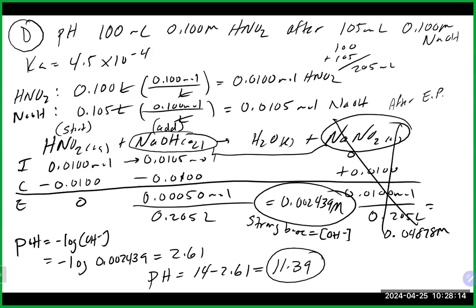A student asks why the reactions are one-way. The first ICE table reaction between acid and base essentially goes to completion. The second ICE table - for hydrolysis or buffer equilibrium - is where you have arrows going in both directions, representing equilibrium. The idea is the first reaction goes essentially to completion, and then the leftover species set up an equilibrium which is the second ICE table.